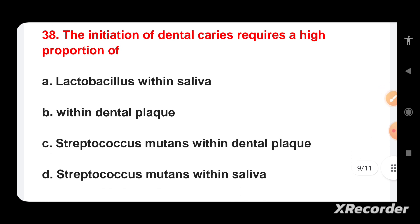The initiation of dental caries requires a high proportion of which organism? Options are: Lactobacillus within saliva, Lactobacillus within dental plaque, Streptococcus mutans within dental plaque, or Streptococcus mutans within saliva. The answer is Streptococcus mutans within dental plaque.